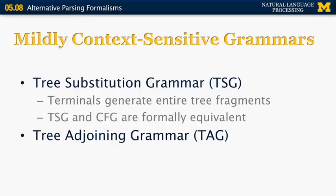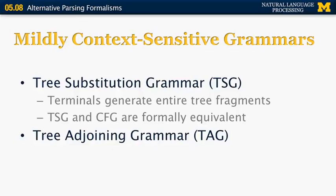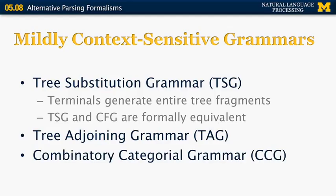The next step up from tree-substitution grammars is tree-adjoining grammar, or TAG, which is more powerful than context-free grammars. The other example we'll look at is combinatory categorial grammar, or CCG, which is also more powerful than context-free grammars. TAGs are like tree-substitution grammars, but they allow adjunction.